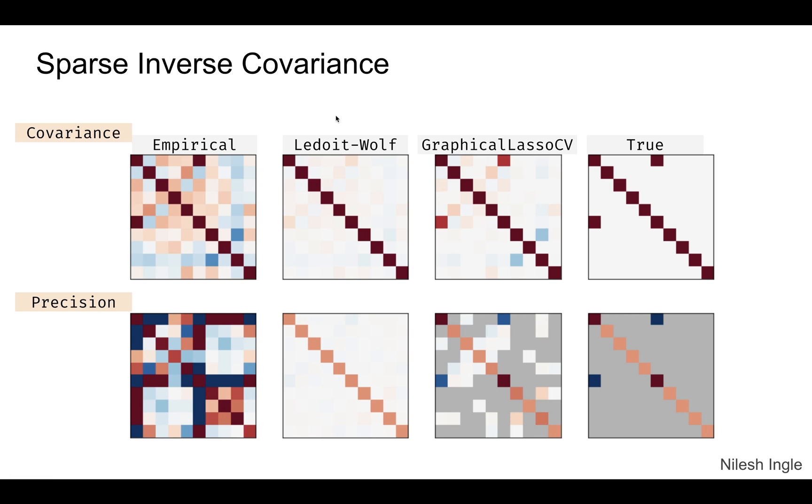For sparse inverse covariance, in this case let's imagine on the right hand side we have these two visualizations for two matrices. The top one is the covariance matrix that is a true covariance matrix and the bottom one is a true precision matrix. This is sparse matrix so most of the values are zero and then these are the values that have non-zero values. In the top row we can see that the empirical values are much farther away from the true values, but the Ledoit-Wolf is pretty close to the true except one important point to note is that the off diagonal elements are away from what the true values are.